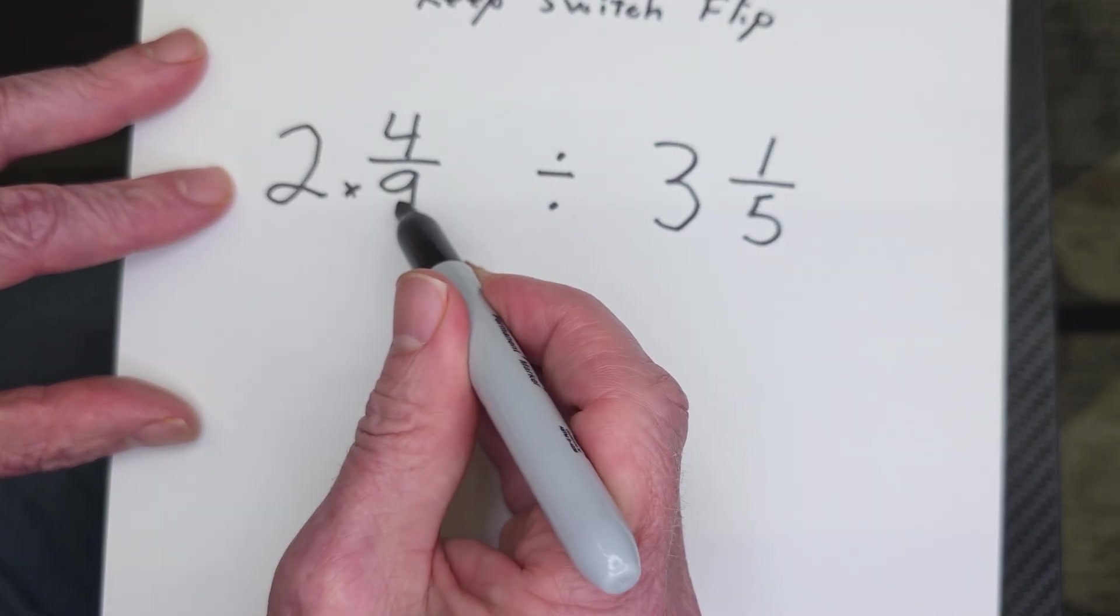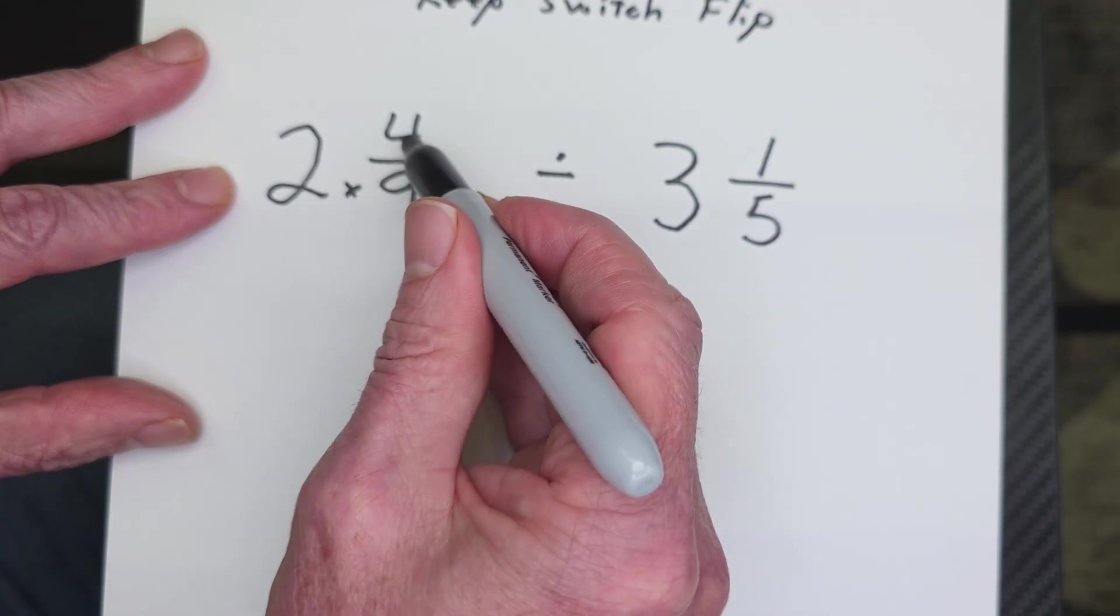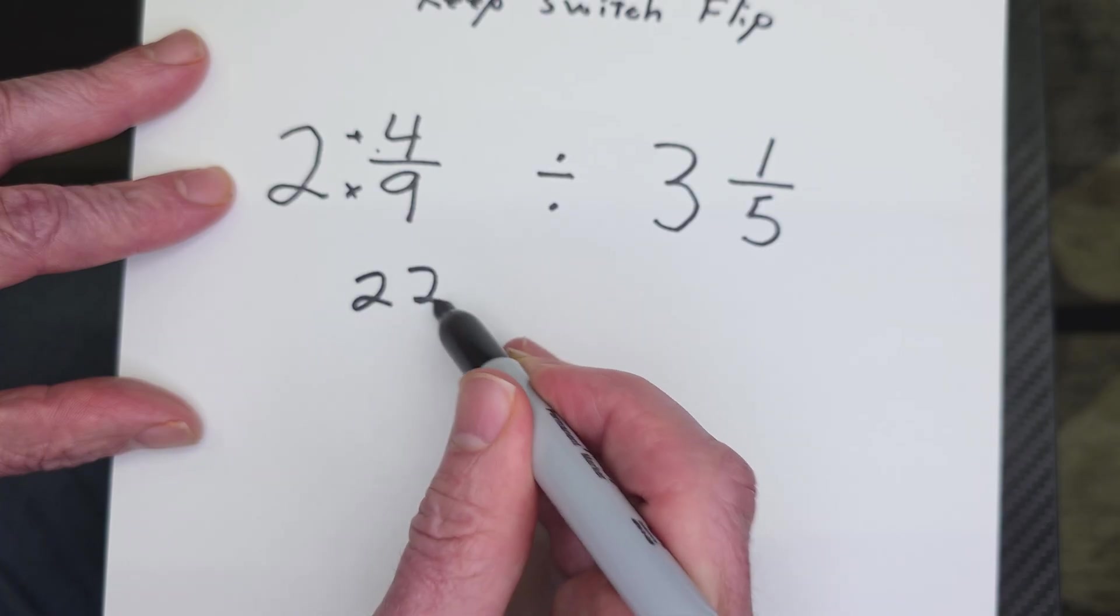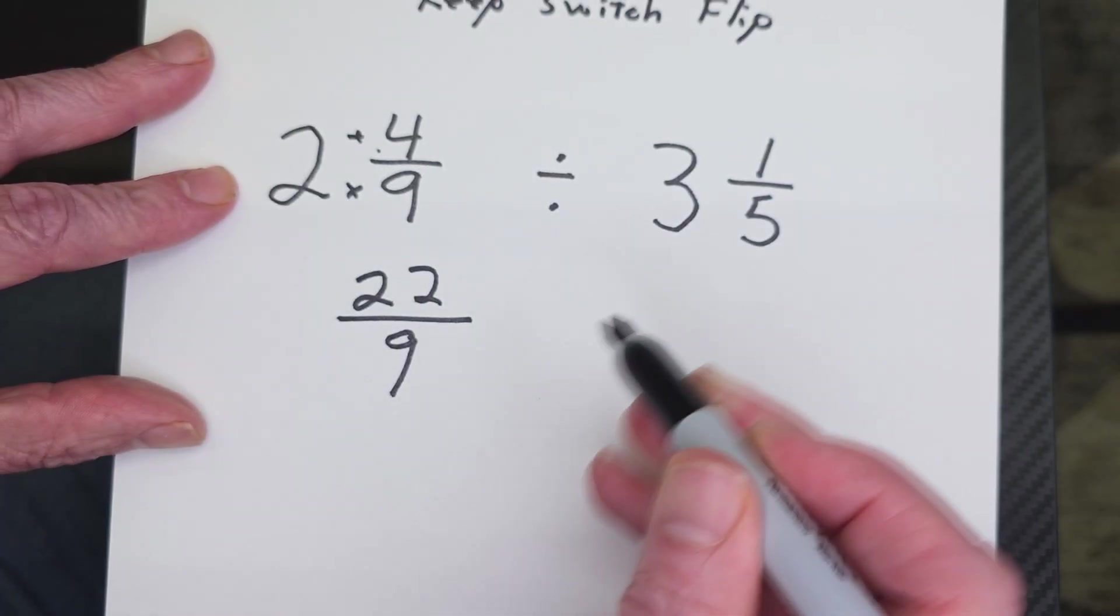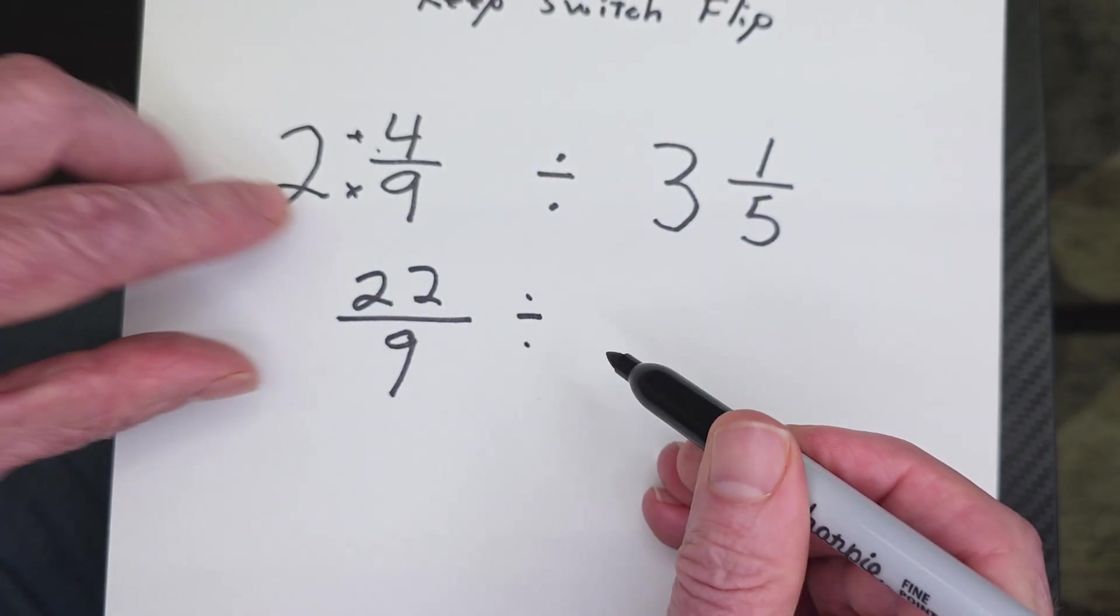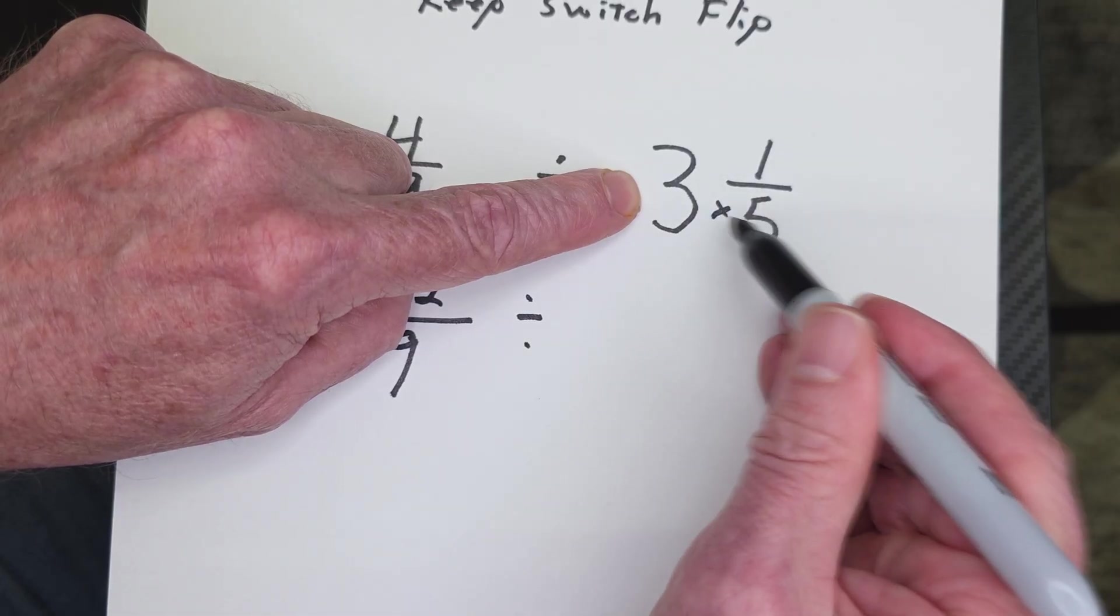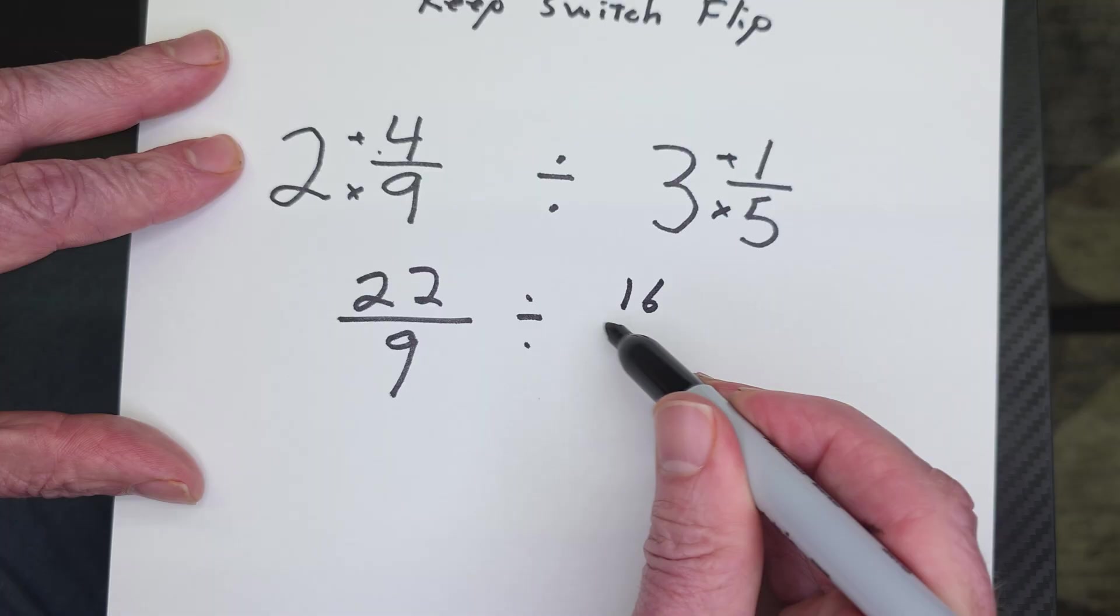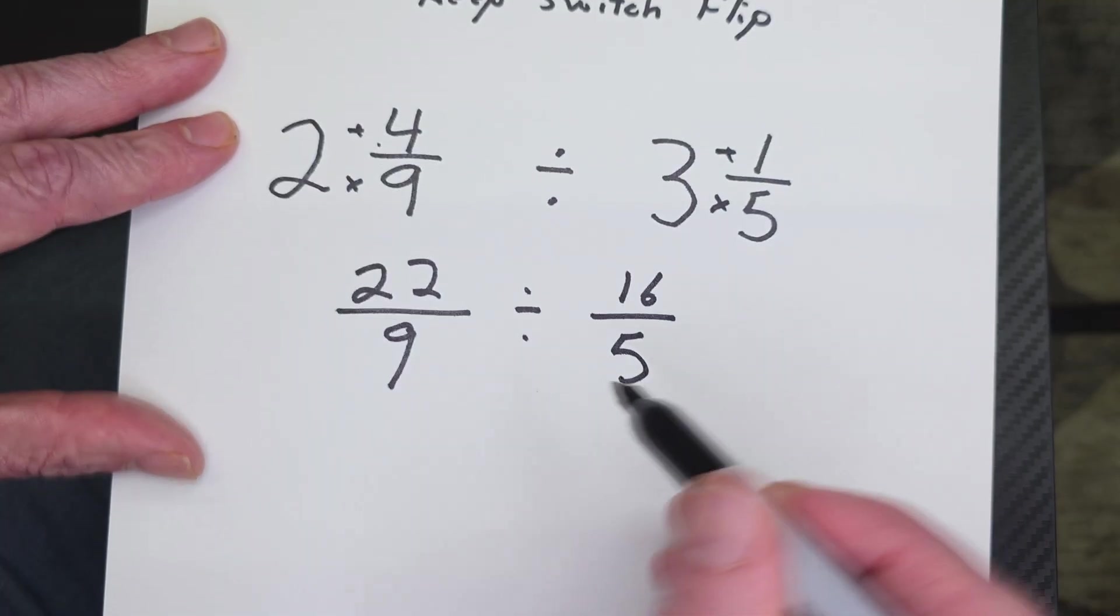So I'm going to multiply 9 times 2, 18. Then plus the 4, 18, 19, 20, 21, 22. So I put the 22 over the 9. Then I keep the division there. Then I do the same thing. 3 times 5, 15, plus the 1, 16, 16 over 5.